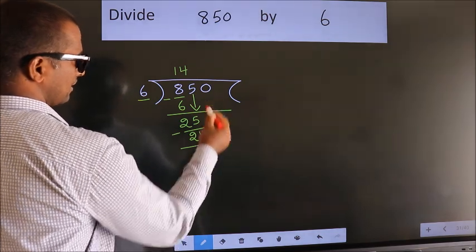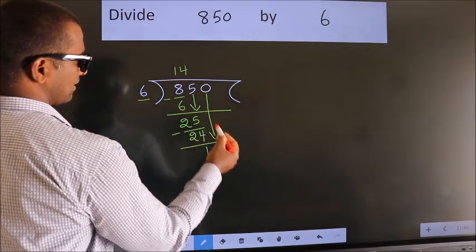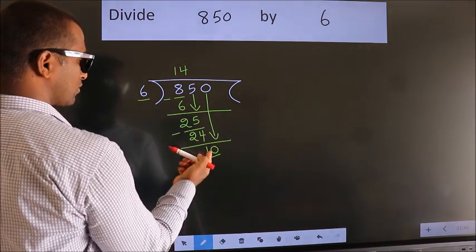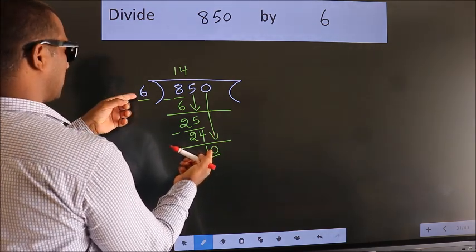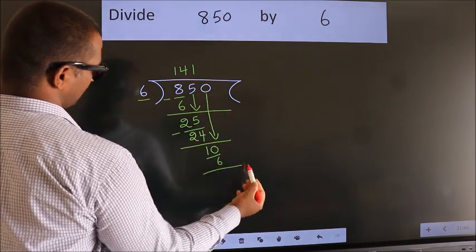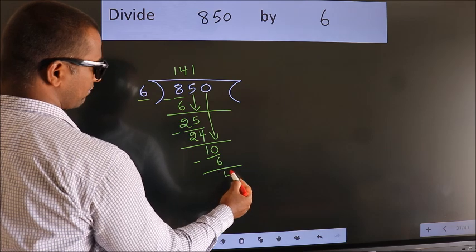After this, bring down the next number. So, 0 down. So, 10. A number close to 10 in the 6 table is 6 ones 6. Now, we subtract. We get 4.